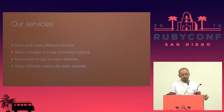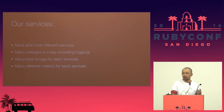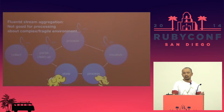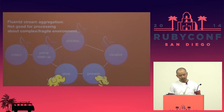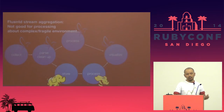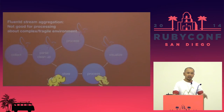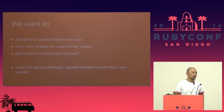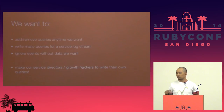But our services are growing with more and more different services, and there are many changes in logging. There are many kinds of logs for each service and many different metrics for each service. Fluentd requires configuration changes and restarts to change what to do, so Fluentd is not so good for processing complex data or fragile environments like schema changes. We want to add or remove queries anytime we want.